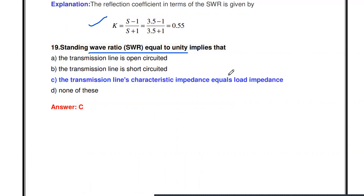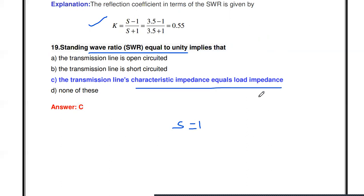The standing wave ratio equal to unity implies — what? When SWR = 1, the transmission line characteristic impedance equals the load impedance ZL, meaning the line is in matched condition. Load impedance equal to characteristic impedance gives a standing wave ratio of 1.